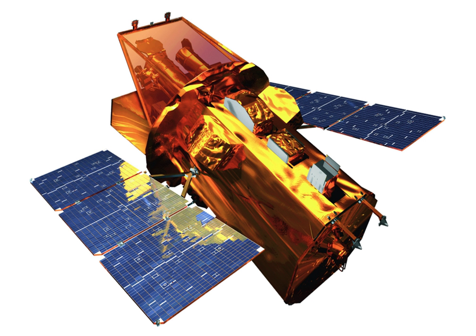The GEDI instrument is a geodetic-class light detection and ranging laser system consisting of three lasers that produce eight parallel tracks of observations. Each laser fires 242 times per second and illuminates a 25-meter spot on the surface over which 3D structure is measured.